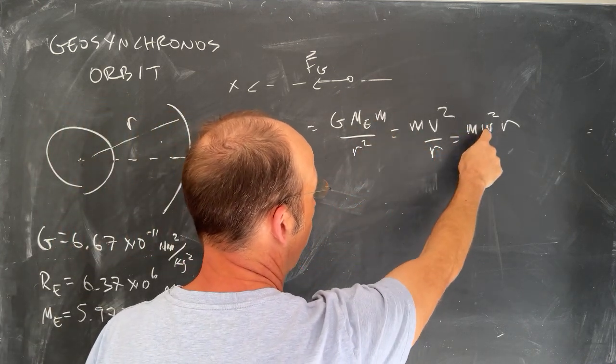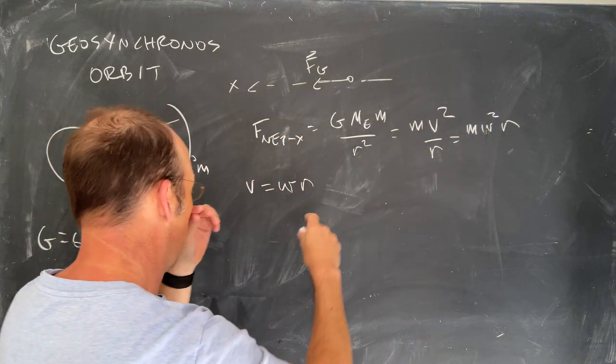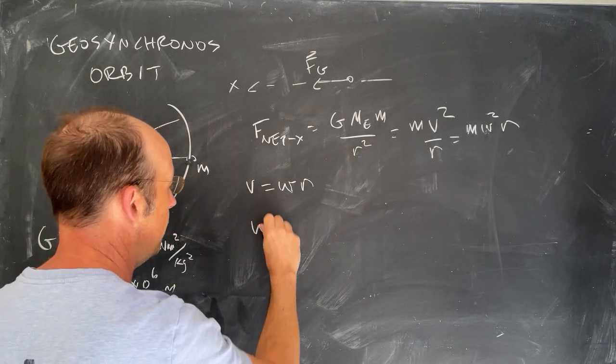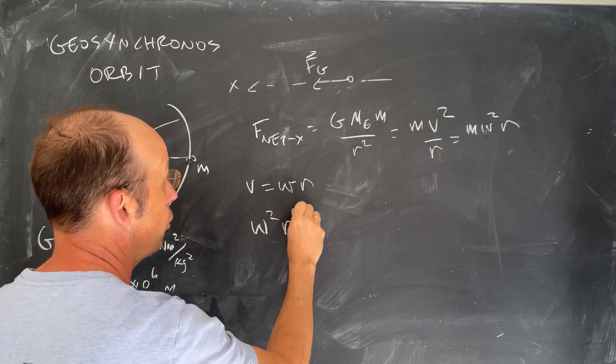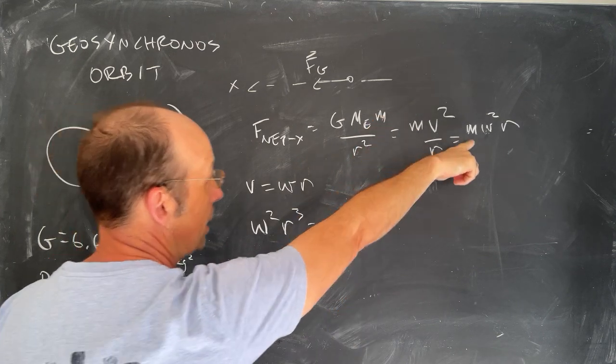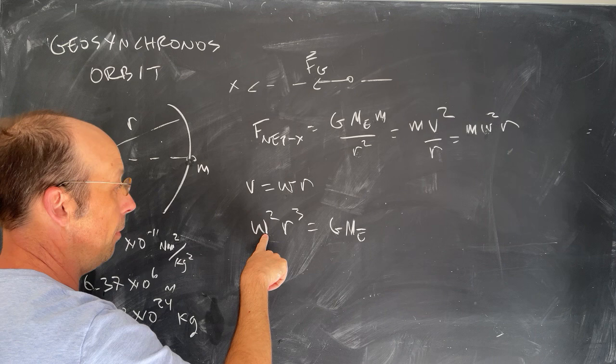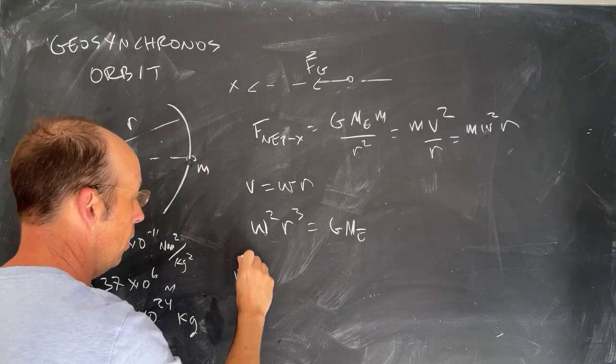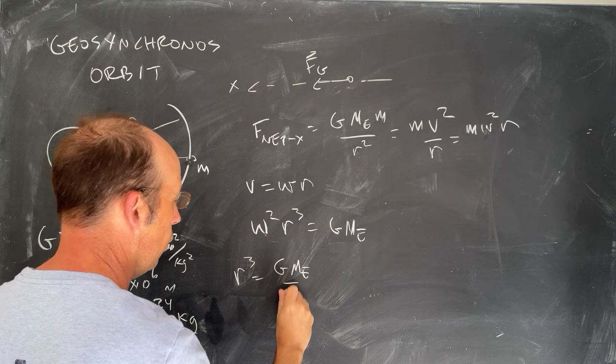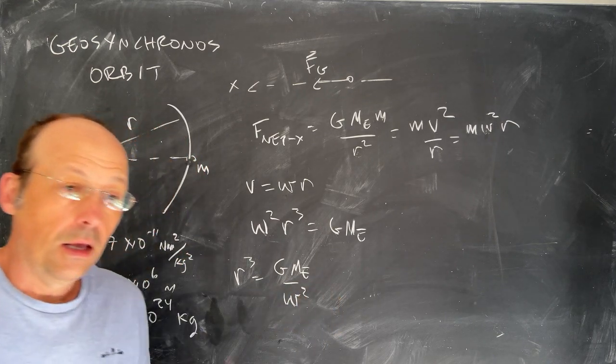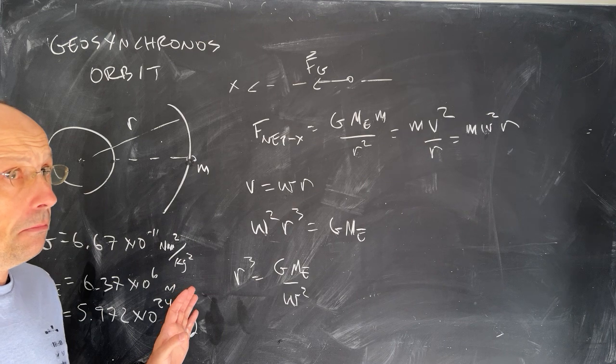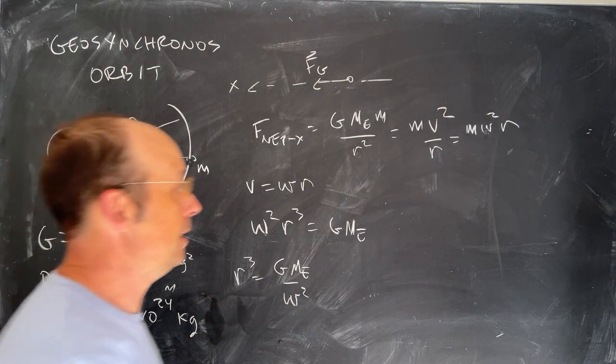First of all, the mass cancels. I want to solve for r. So I'm going to multiply both sides by r squared, and I get omega squared r cubed equals G mass of the earth, right, because this mass cancels. Now I'm going to divide both sides by omega, and I get r cubed equals G mass of the earth over omega squared. Now we have to find omega. And we could just look it up, but I don't want to do that. So let's calculate omega.